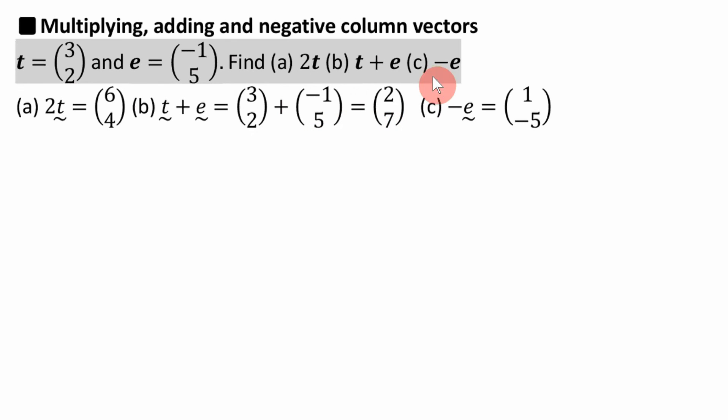And then finally C, that's just showing you another easy thing just like the rest of it. How to do a negative vector, which basically means do the opposite of the vector itself. Before it was minus 1, 5, now we're doing the opposite, which is 1 minus 5.